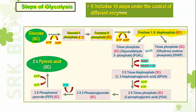One ATP is used during the conversion of glucose into glucose-6-phosphate, and another during the conversion of fructose-6-phosphate into fructose-1,6-bisphosphate. All these intermediates from glucose to fructose-1,6-bisphosphate contain 6-carbon atoms. Now this molecule undergoes cleavage — equal splitting. Fructose-1,6-bisphosphate is broken into two molecules of 3-carbon compound.